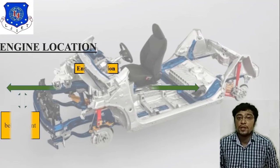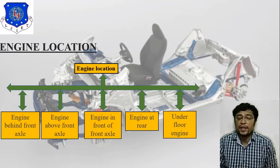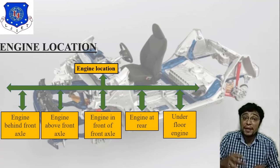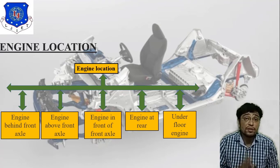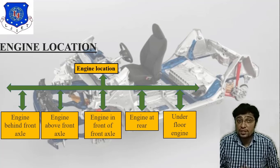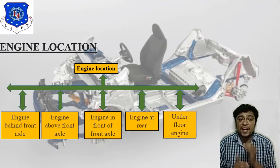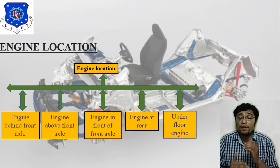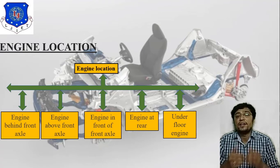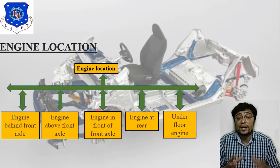The next topic is engine location. Here I have attached five different tables so you can directly understand engine location. Engine location refers to where we can implement or place the engine. The five types are: first, engine behind the front axle; second, engine above the front axle; third, engine in front of the front axle — this is a very important criterion; fourth, engine at the rear axle; and fifth, underfloor engine. In this way we can specify and develop engine location.